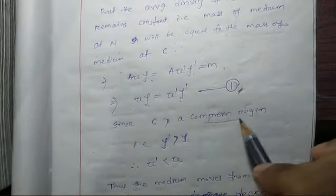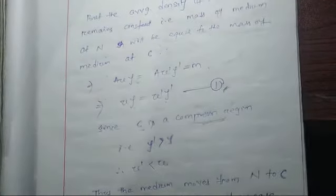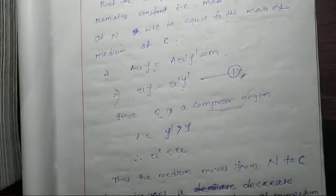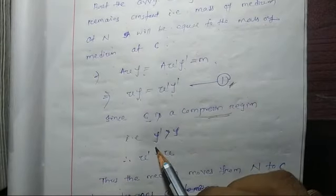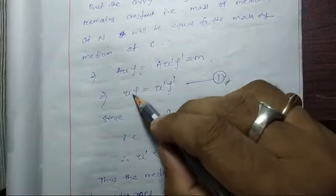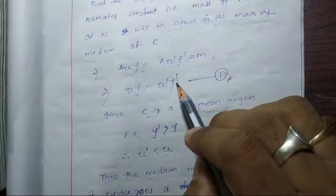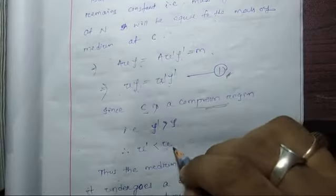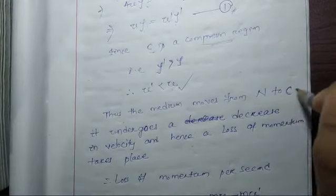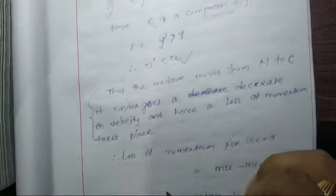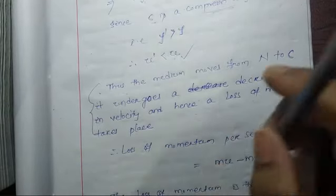Since C is a compression region, we know that at point C we get a large number of molecules compared to N and compared to the rarefaction region. Therefore at point C the density will be larger, meaning ρ' > ρ. Since U·ρ = U'·ρ' and ρ' > ρ, it follows that U > U'. Thus as the medium moves from N to C it undergoes a decrease in velocity and hence a loss of momentum takes place.